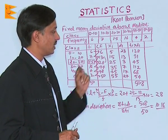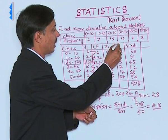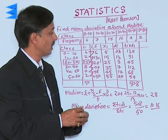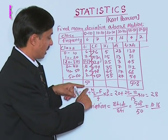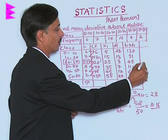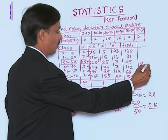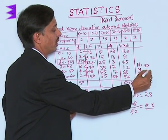Now xi are these, and before finding the deviations we need to calculate the median. In this case, how to calculate the median? Capital N means the sum of all the frequencies, which is 50. N by 2 is 25.